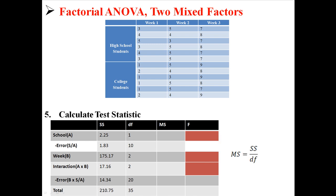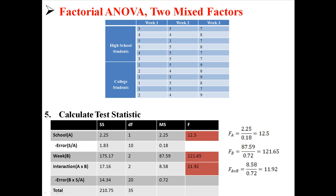Now we just have to find the mean squares. Mean square is just sum of squares divided by degrees of freedom. For mean square school, we take 2.25 divided by 1 and get 2.25. For the error, we take 1.83 divided by 10 and get 0.18. You just divide across, so once you're that far it's not hard to find mean square. Next, we find our three F-statistics by taking the MS effects and dividing them by their associated error terms.